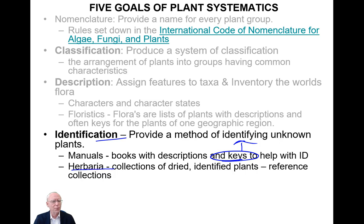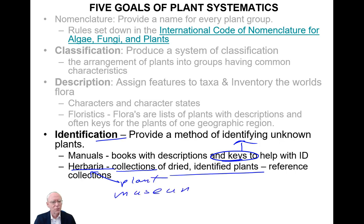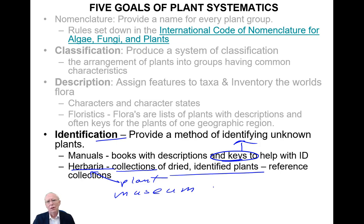Identifications also depend on herbaria — collections of dried, identified plants. These are reference collections; essentially a herbarium is a plant museum. It consists of dried, dead plants that have been pressed completely flat, dried, glued onto sheets of paper, and placed into cabinets. There can be hundreds of cabinets containing hundreds of thousands of plant specimens, arranged so you can find the plant you're looking for.